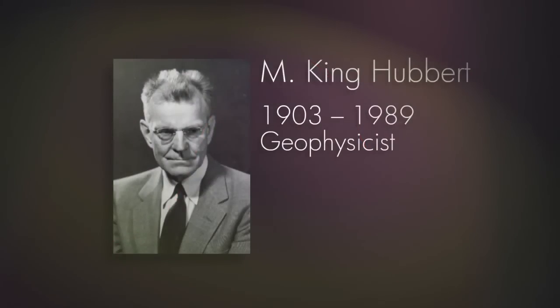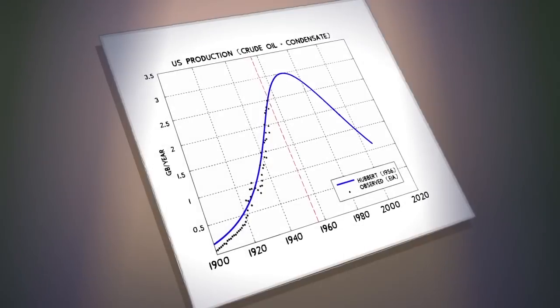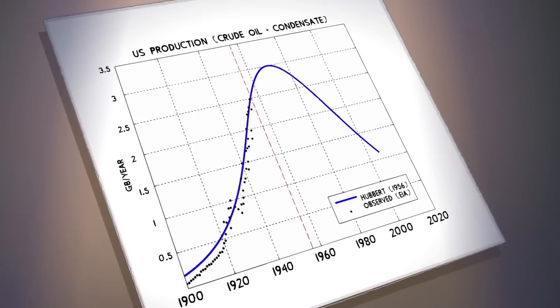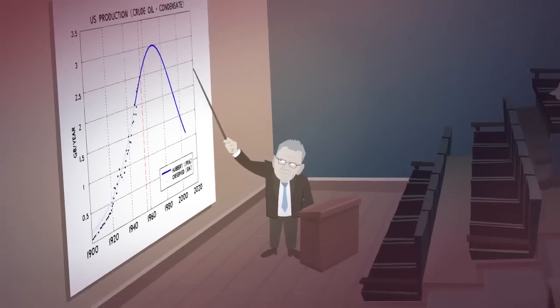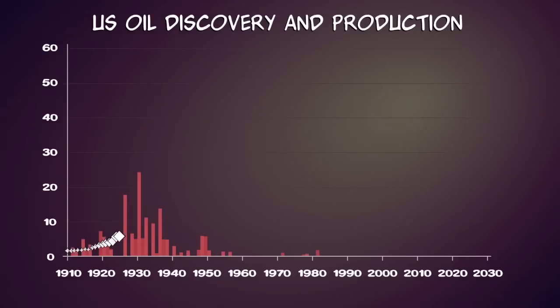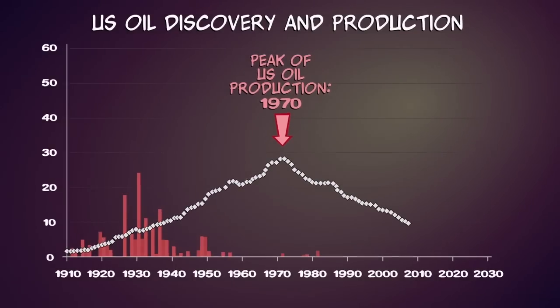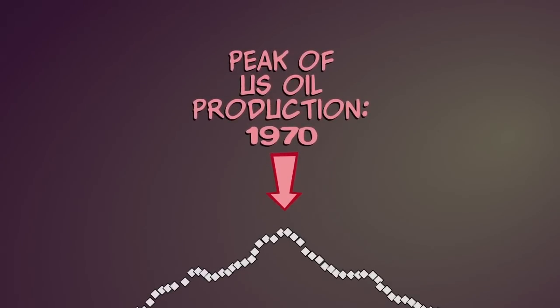In the 1950s, Shell geophysicist M. King Hubbert predicted that America's oil production would peak in 1970, 40 years after the peak of US oil discovery. Few believed him. However, in 1970, American oil production peaked and entered a permanent decline. Hubbert was vindicated.